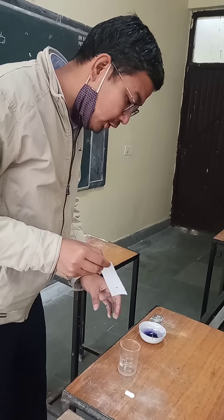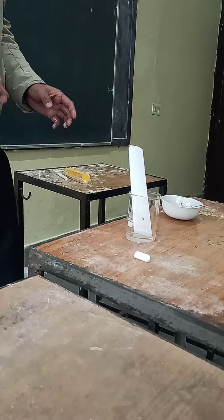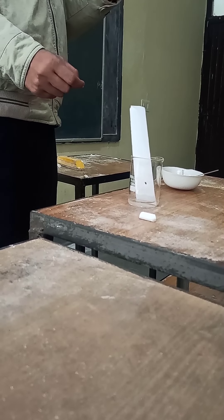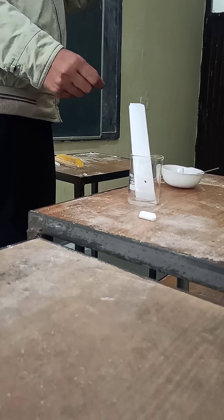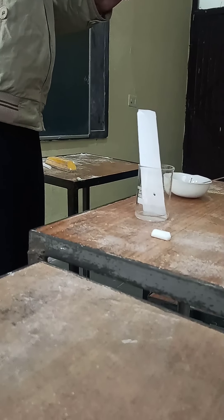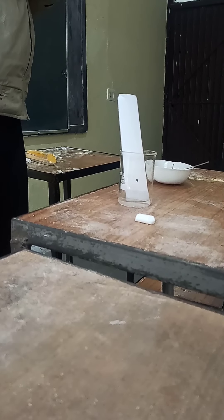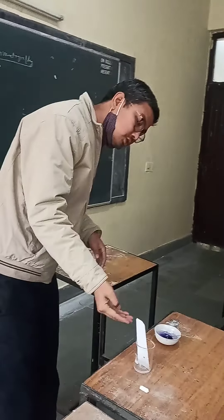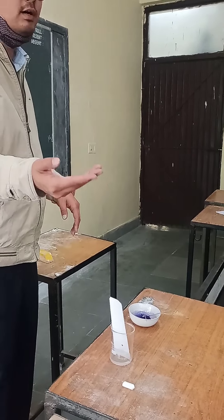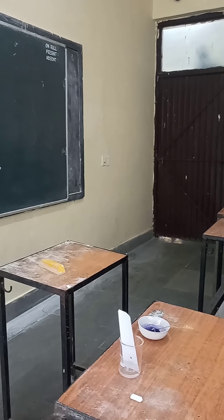Now put the paper in the solvent chamber. Always take care that the solvent does not touch the baseline — the solvent level should lie below the pencil line. Otherwise your drop will spread out. You will see the solvent is rising slowly; it takes about one hour.